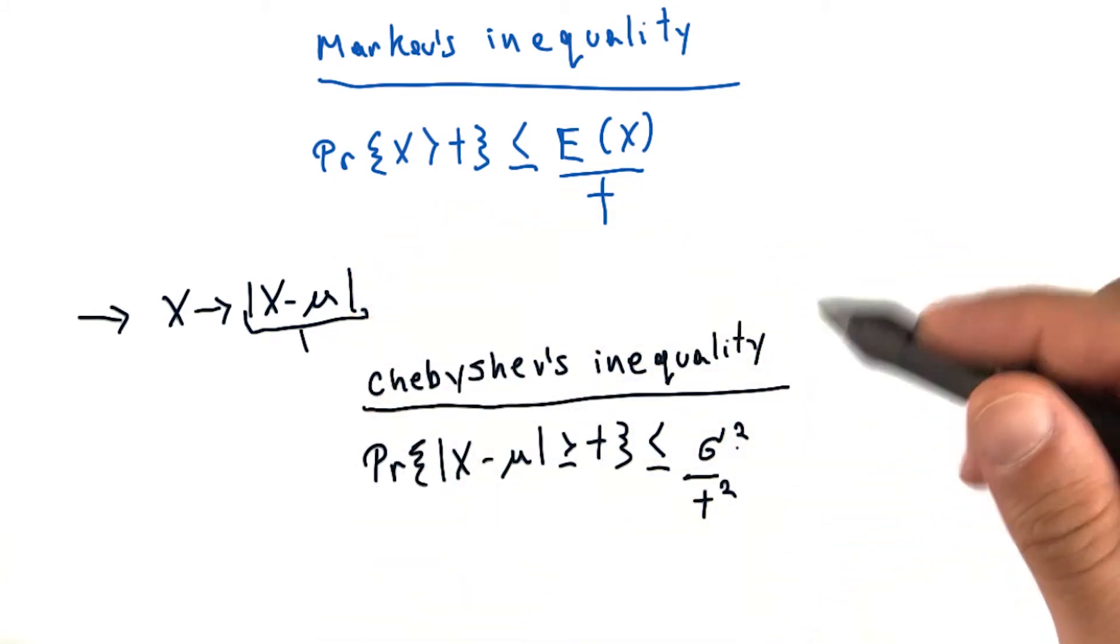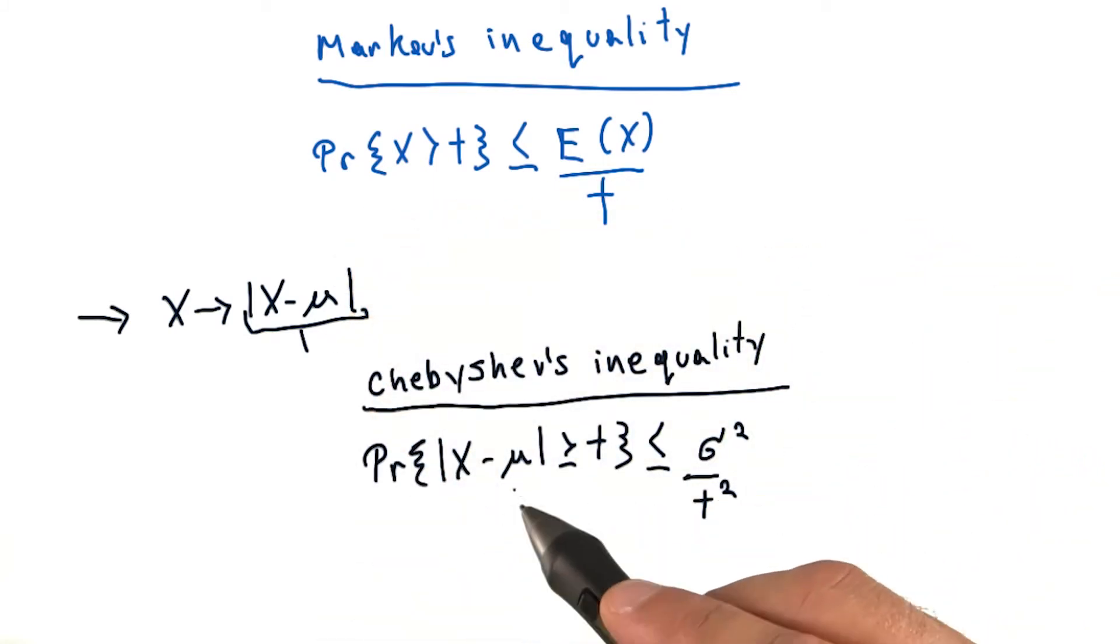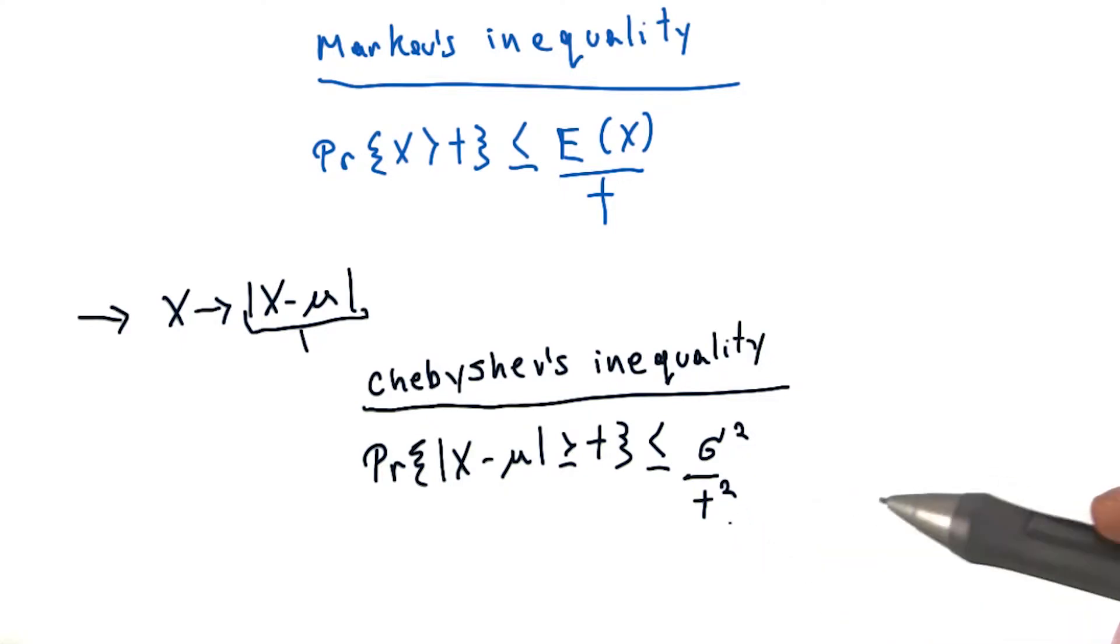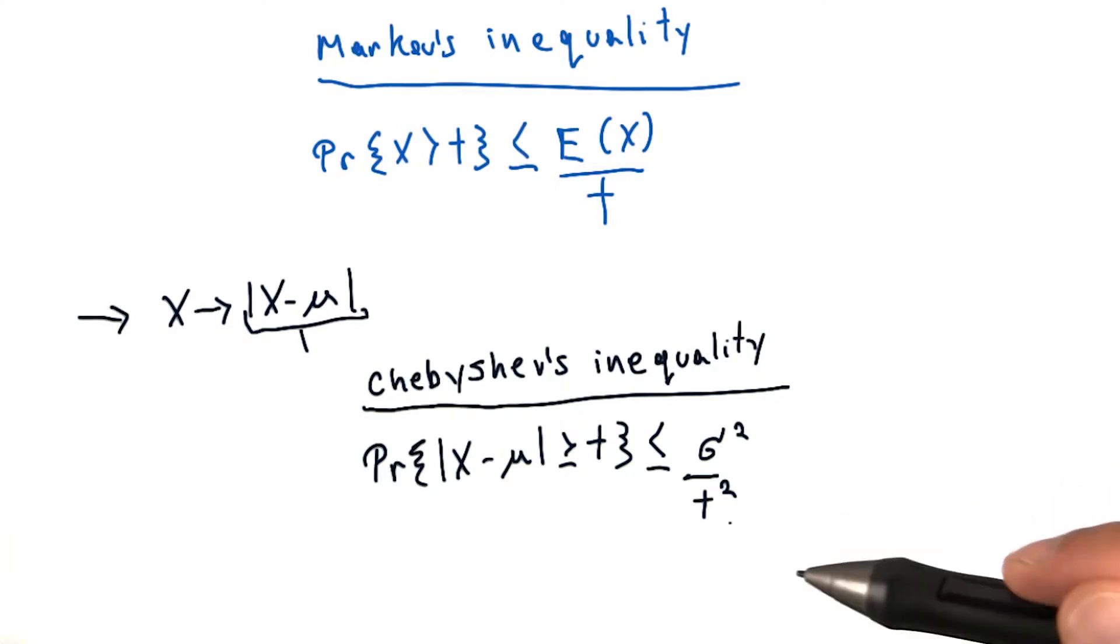Chebyshev's inequality says that the probability that x deviates from its mean value by an amount t is bounded by an expression described by its variance and t. This is actually really amazing and quantifies exactly the concept that we've been intuitively talking about.